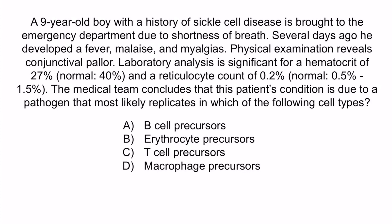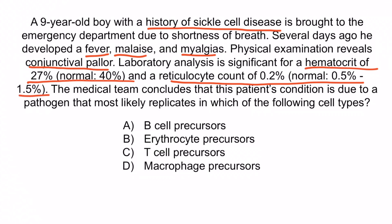Let's go through the key points from the question. This boy has a history of sickle cell disease. Several days ago, he developed a fever, malaise, and myalgias, which was likely due to a viral infection. His presentation at the emergency department has shown conjunctival pallor, so we can conclude that he has anemia. These features are highly suggestive of an aplastic crisis, which is confirmed by the laboratory results showing a decreased hematocrit and reticulocyte count. A normal response to a low hematocrit would be to increase the production of red blood cells from the bone marrow, causing the reticulocyte count to rise. However, this patient has a lower than expected response, meaning that the bone marrow is unable to adequately produce reticulocytes. Therefore, we can conclude that the virus replicates in erythrocyte precursors in the bone marrow, resulting in abnormal erythrocyte production and a transient aplastic crisis. The correct answer is B, erythrocyte precursors.